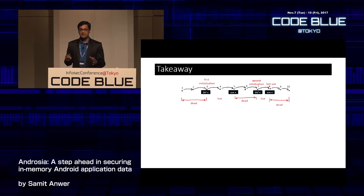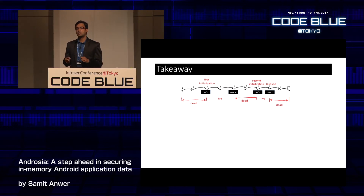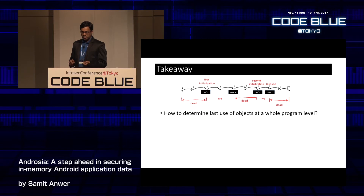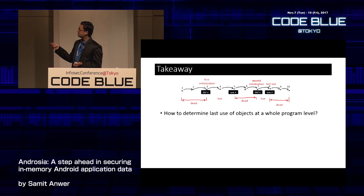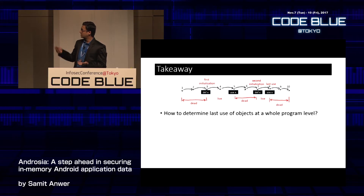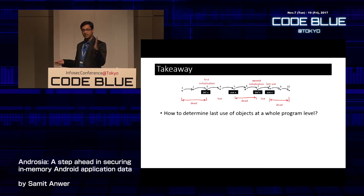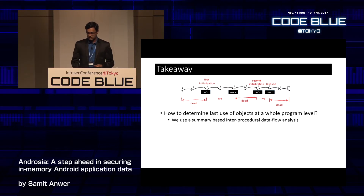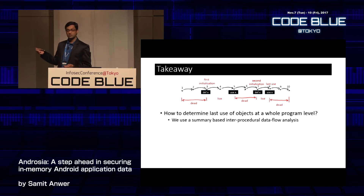This is how we compute the liveness status of a variable, which helps decide when to clear memory contents. Statements 5 and 8 are the last uses of objects referenced by variable x. We want to determine these last usage points across the whole program — not just within one method — using a summary-based inter-procedural data flow analysis.